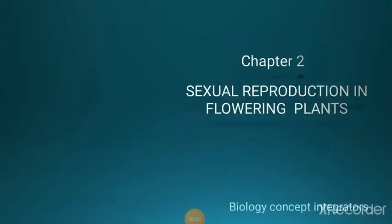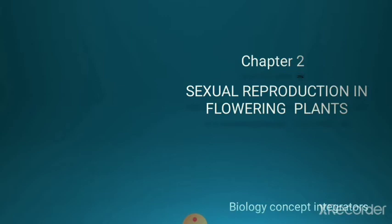Welcome students. This is the second and last part of Chapter 2 - Sexual Reproduction in Flowering Plants. In the previous video we discussed the structure of flower, reproduction types, and development of male gametophyte, that is microsporogenesis. In this video we will discuss development of female gametophyte, fertilization, pollination, embryonic development, and post-fertilization changes in flowers.